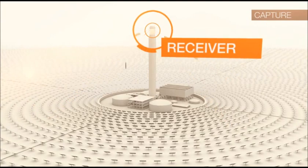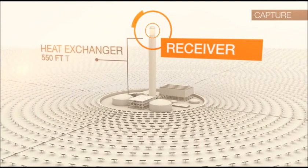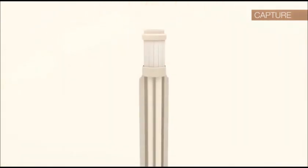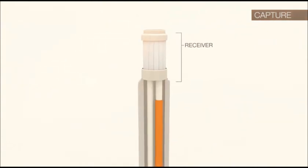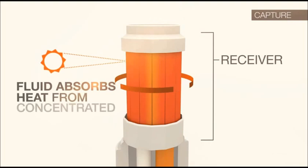The receiver sits on top of a 550-foot tower. Within the receiver, fluid flows through the piping that forms the external walls. This fluid absorbs the heat from the concentrated sunlight.